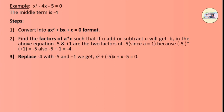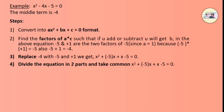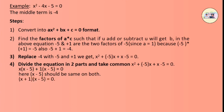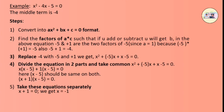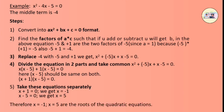Replace minus 4 with minus 5 and plus 1 to get x squared minus 5x plus x minus 5 equals 0. Divide the equation into two parts and take common: x(x minus 5) plus 1(x minus 5) equals 0. Here, (x minus 5) is common on both sides. Therefore, (x plus 1)(x minus 5) equals 0. Taking each factor separately: x plus 1 equals 0 gives x equals minus 1, and x minus 5 equals 0 gives x equals 5. Therefore, x equals minus 1 and x equals 5 are the roots of the quadratic equation.